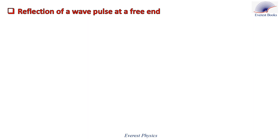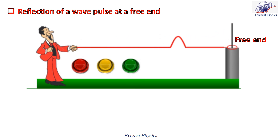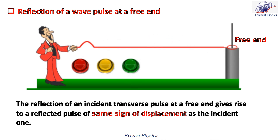Now let's observe the reflection of a transverse wave pulse at a free end. This end is said to be free because it is movable. The pulse is not inverted upon reflecting off the free end. The reflection of an incident transverse pulse at a free end gives rise to a reflected pulse of the same sign of displacement as the incident one.